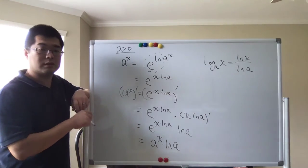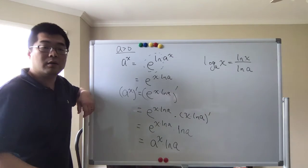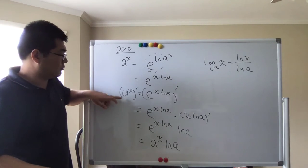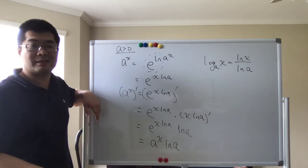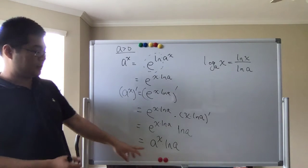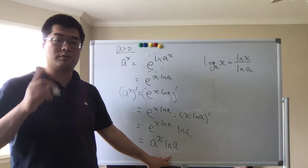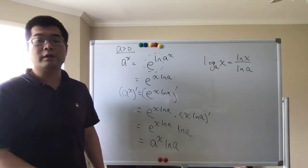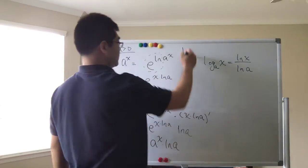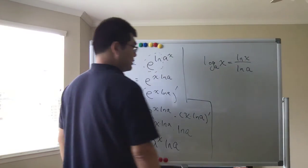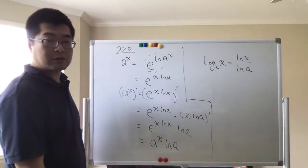You can verify this by substituting a equals e: the derivative of e to the x is itself, and e to the x times ln(e) equals e to the x times one, which confirms the result. So the derivative of a to the power of x is a to the power of x times ln(a).